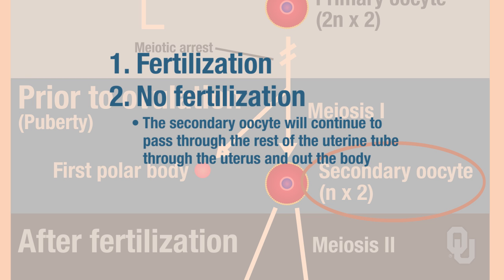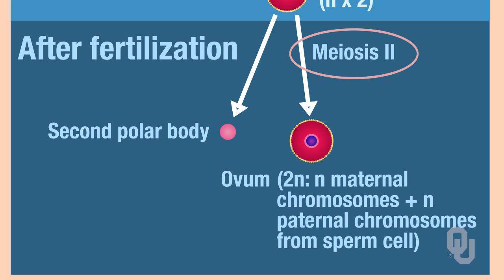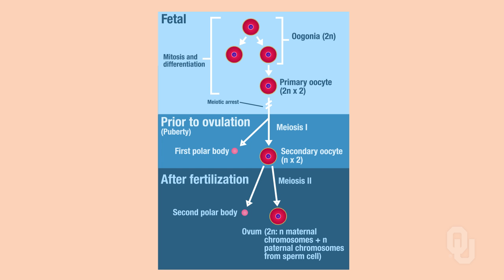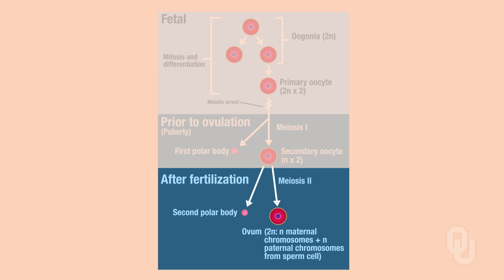If fertilization does take place, then meiosis II occurs. Once meiosis II occurs, we're going to produce an ovum, and we get a second polar body as well. Polar bodies disintegrate, so we won't worry about those. On the oogenesis diagram, this last phase is after fertilization.